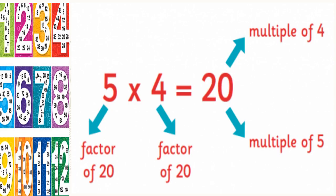One more example: 5 4's are 20. So 20 is a multiple of both 5 as well as 4. And 5 and 4 are called factors of 20, which you have learned already in your previous chapter. So 20 is a number with factors.